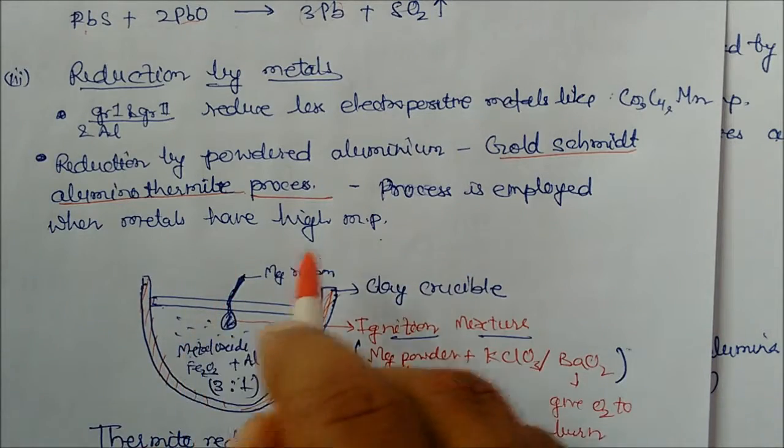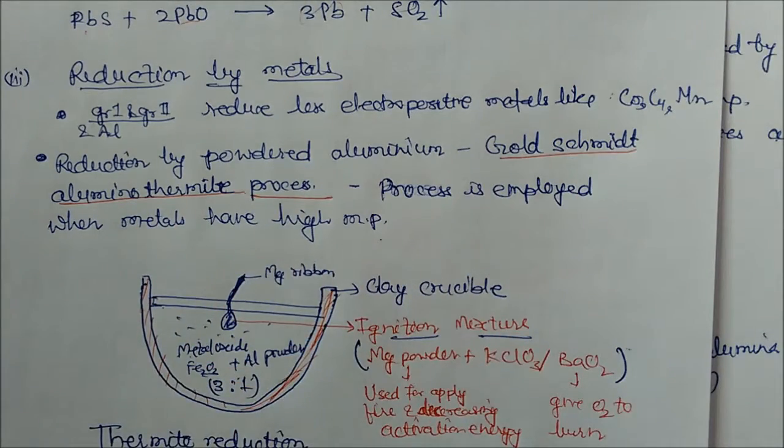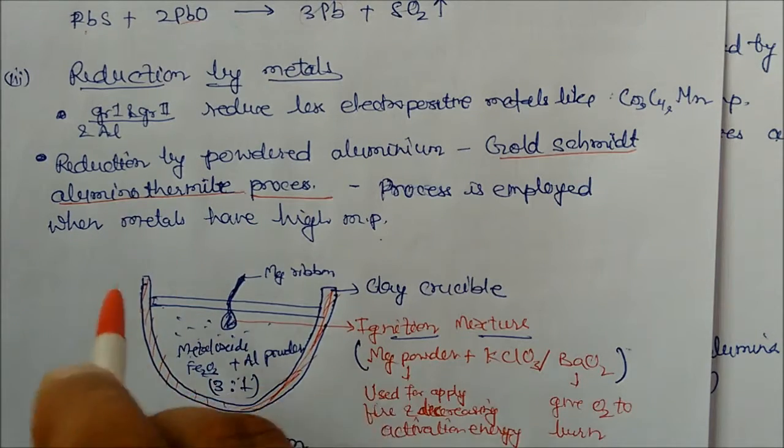And again, this process is applied when the metals have high melting point. That means these metals, chromium, copper, manganese have a high melting point. So let us see how this process is utilized.